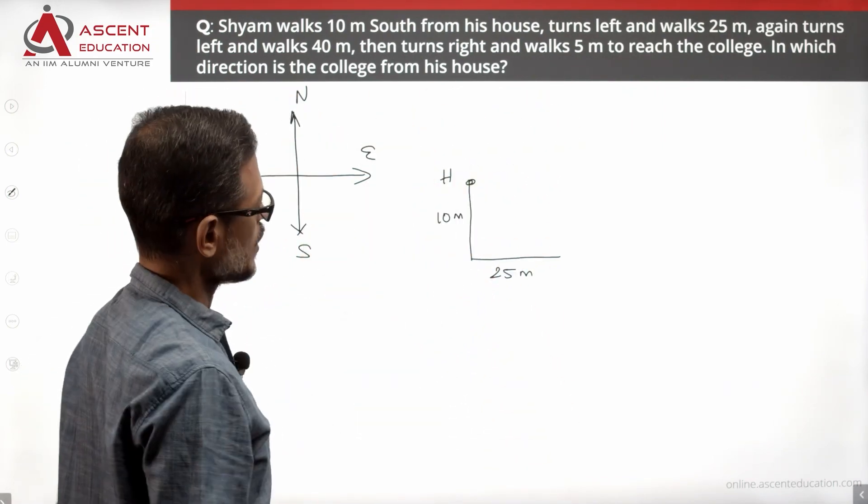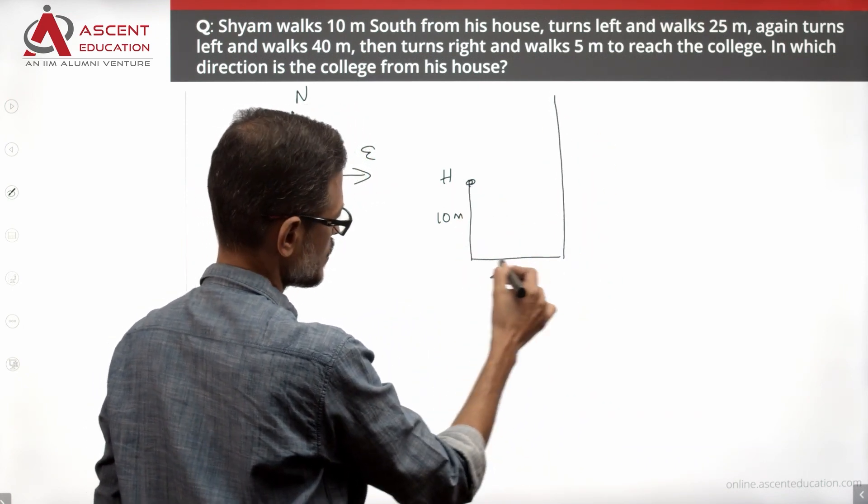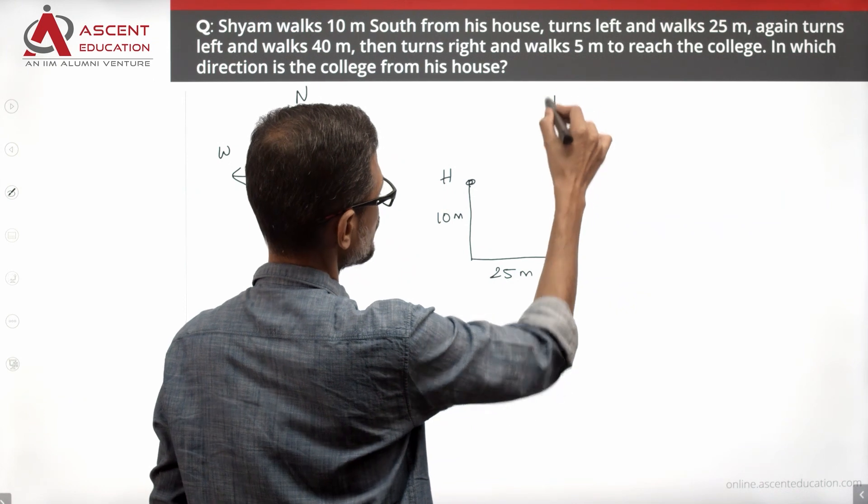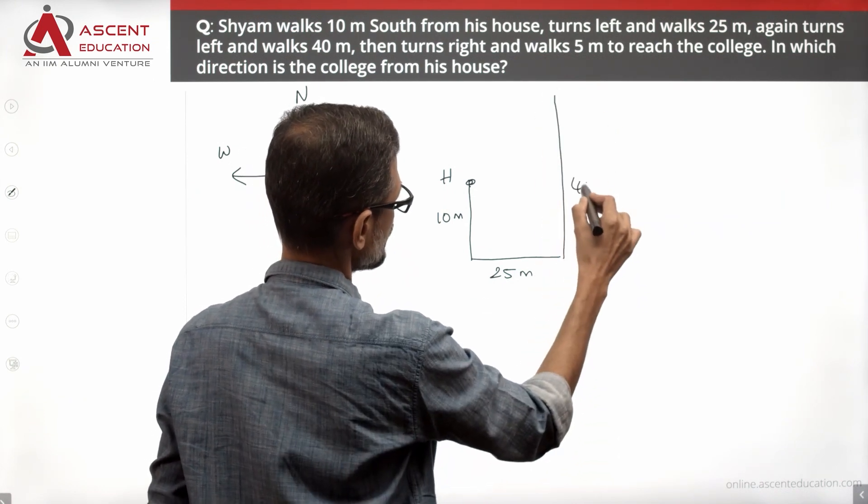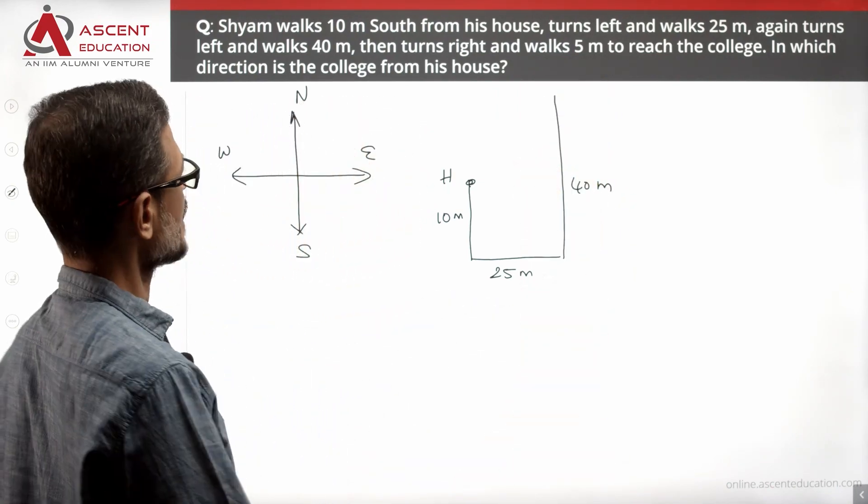Again turns left and walks 40 meters. He is turning and walking 40 meters. He was 10 meters south. After turning left, he is going to walk upward and he is walking 40 meters. So at this point, he is now 30 meters up in the direction.